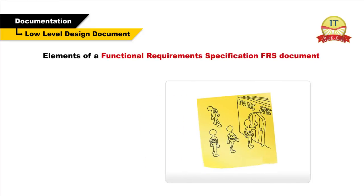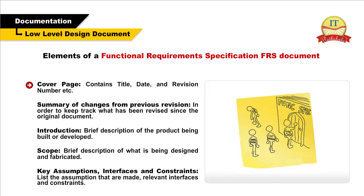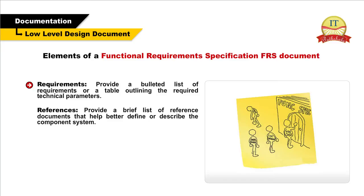Elements of a Functional Requirements Specification Document: Cover page — contains title, date, and revision number. Summary of changes from previous revision — to keep track of what has been revised since the original document. Introduction — brief description of the product being built or developed. Scope — brief description of what is being designed and fabricated. Key assumptions, interfaces, and constraints — list the assumptions that are made, relevant interfaces, and constraints. Requirements — a bulleted list of requirements or a table outlining the required technical parameters. References — a brief list of reference documents that help better define or describe the component system.